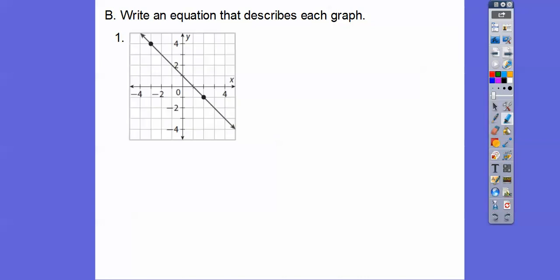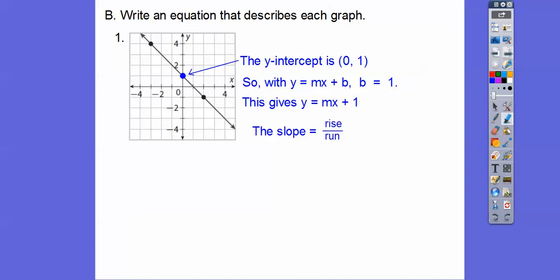Write the equation that describes each graph. This equation right here, where it goes through the y-axis is our y-intercept. So that's your b, and y equals mx plus b. It's going to be y equals mx plus 1 right there. And then to get the slope, it's rise over run.